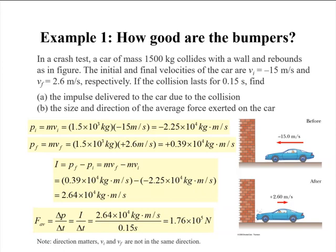Let's look at an example. In a crash test, a car of mass 1500 kilograms collides with a wall and rebounds as in the figure. The initial velocity is VI equals negative 15 meters per second — negative because it's going towards the left or the west direction — and the final velocity is positive 2.6 meters per second because the car rebounds back towards the right or the east direction. The initial momentum PI equals M·VI, which is 1500 kilograms times negative 15 meters per second, giving us negative 2.25 times 10 to the fourth kilogram·meters per second.